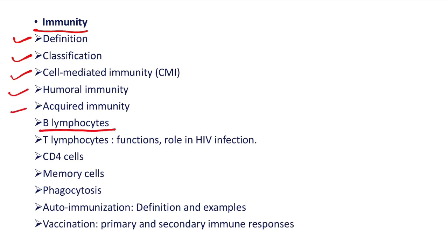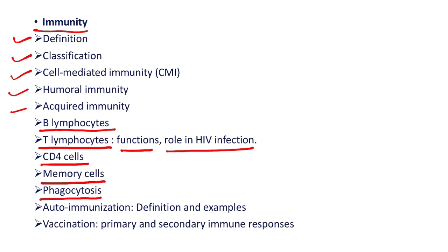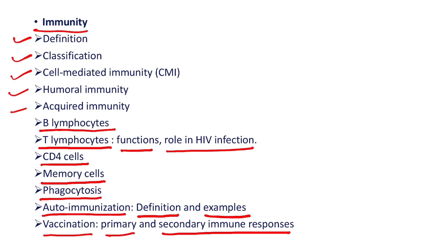Then, add a note on B-lymphocytes and T-lymphocytes. Functions of T-lymphocytes were asked, and its role in HIV infection. Then, add a note on CD4 cells and memory cells. Then, phagocytosis. What is auto-immunization? Define it and give examples. Then, vaccination — here, primary and secondary immune responses were asked.